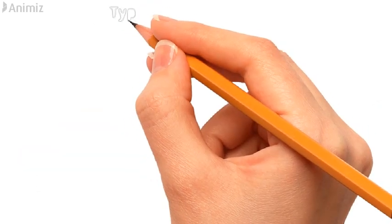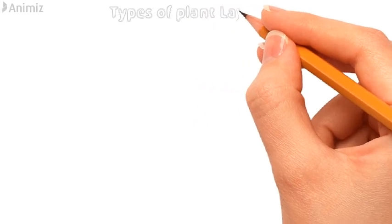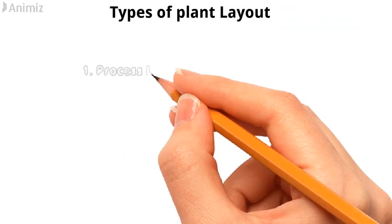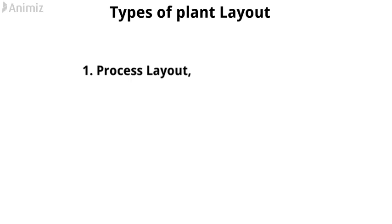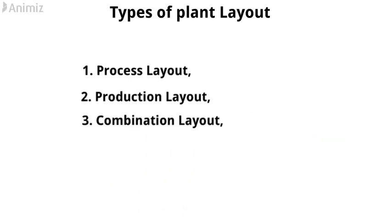Let's move on to types of plant layout. There are 4 types of plant layout: process layout, product layout, combination layout, and fixed position layout.